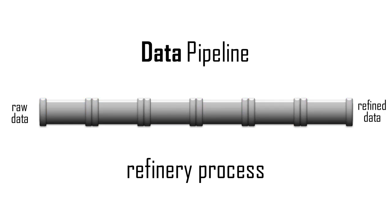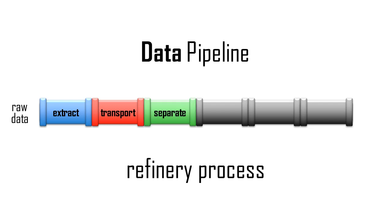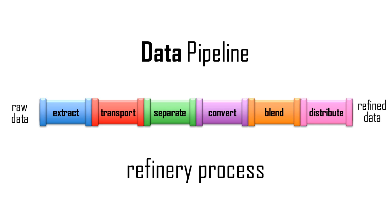Similarly, we can view a data pipeline as a refinery process of tasks where the output of one task is the input of the next. A copy of raw data is extracted from its original source. The data moves to a server where it will be processed. Records that don't meet certain criteria are filtered out. Values are transformed and records are reformatted. Source values are joined with reference data, and the refined records are stored in a location for consumption by BI tools and analytic models.